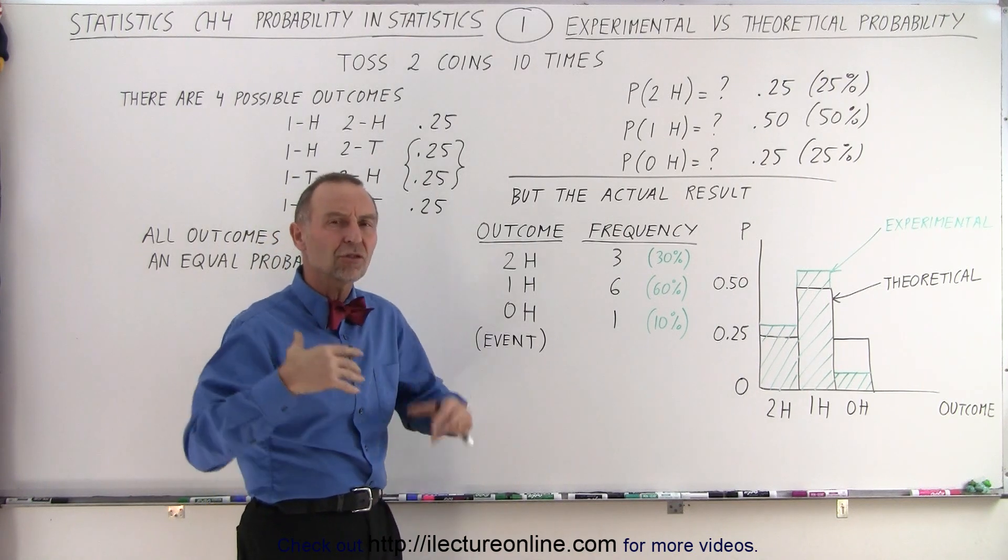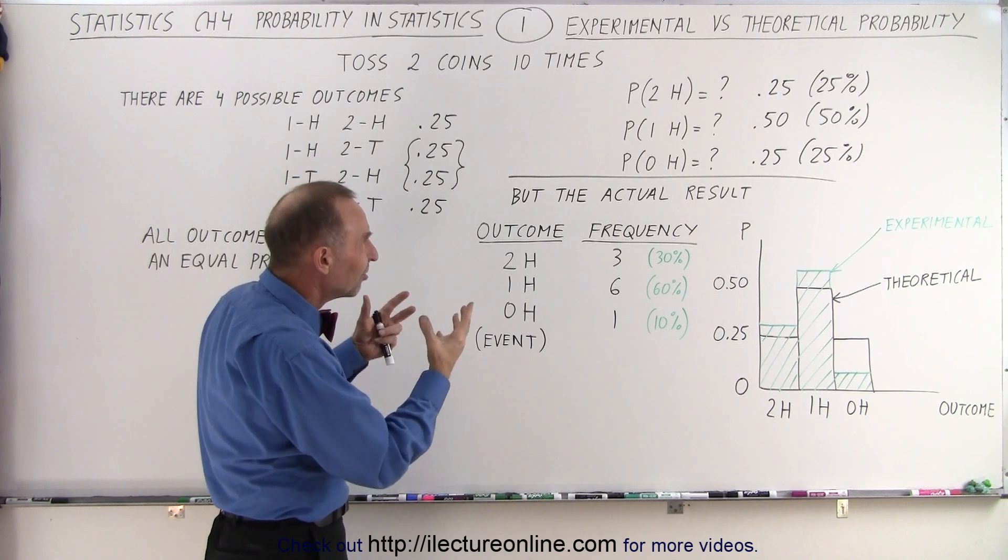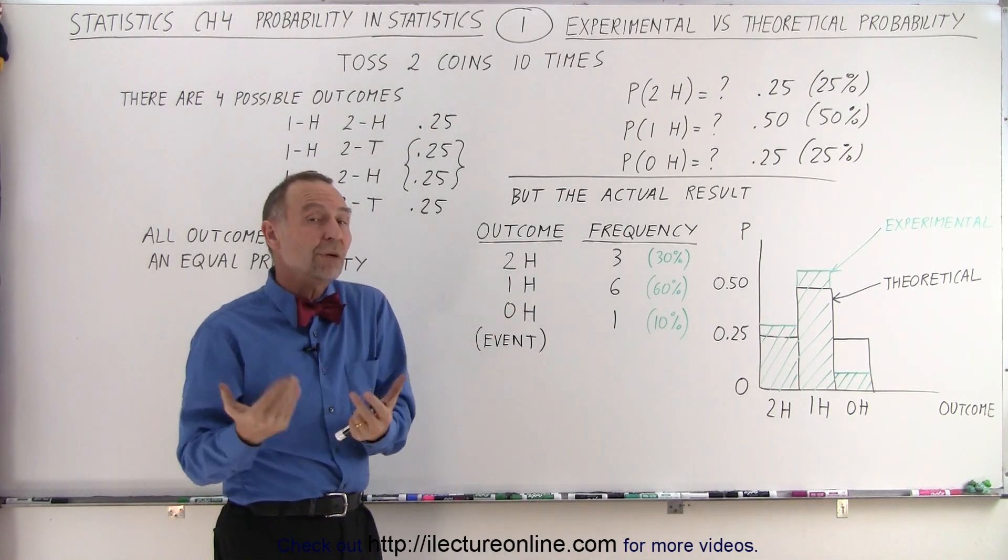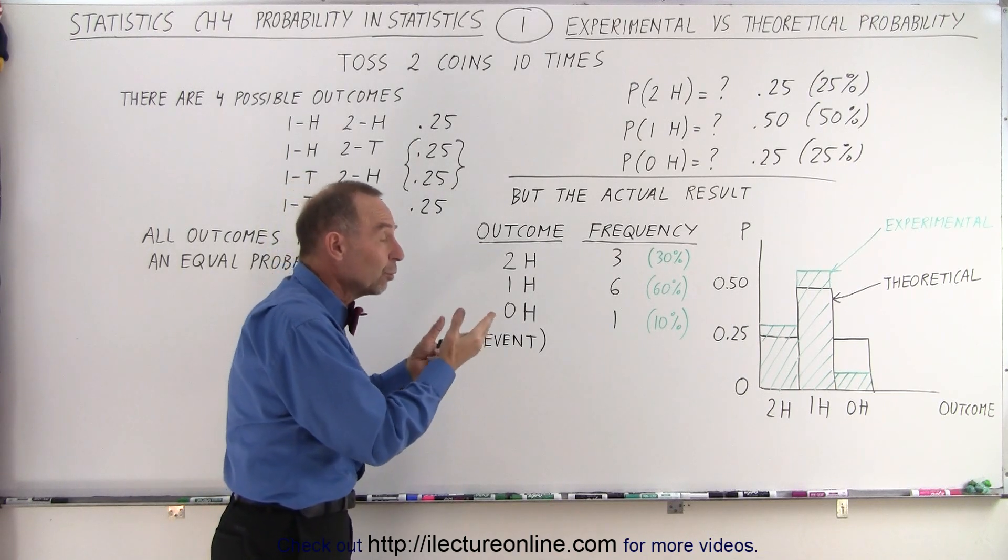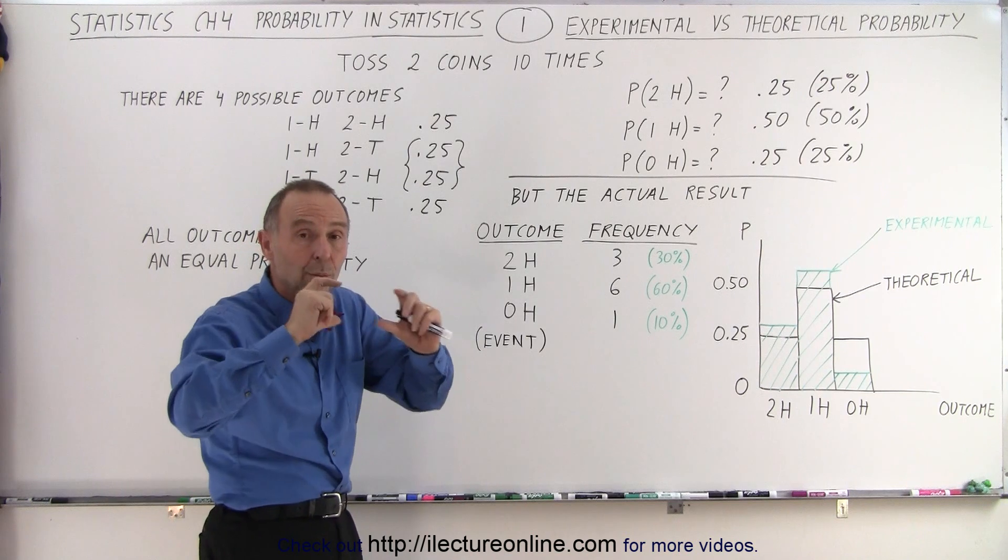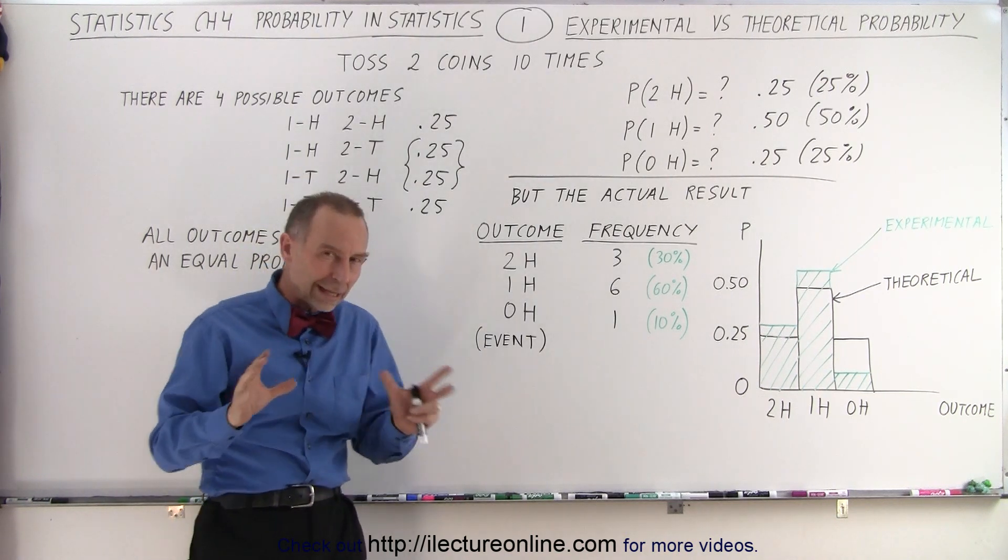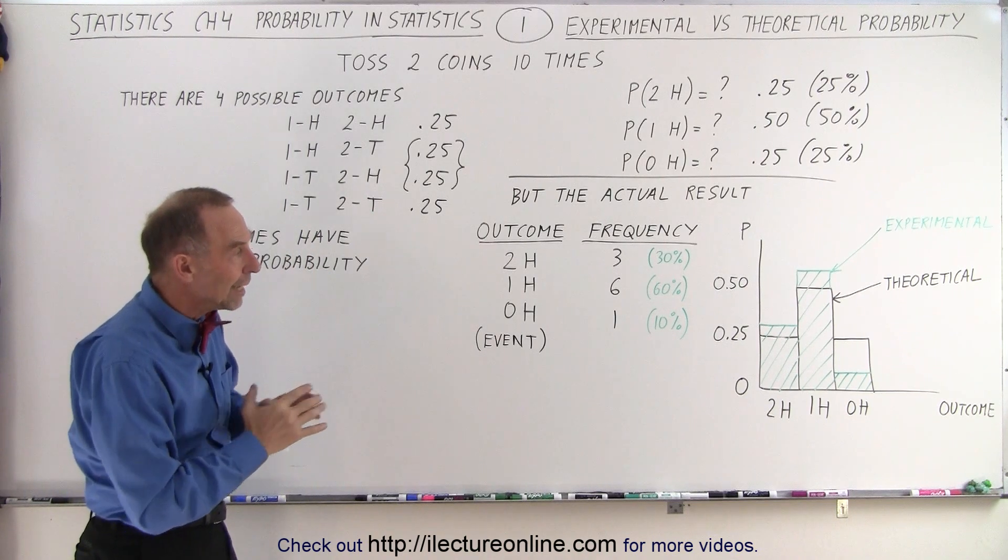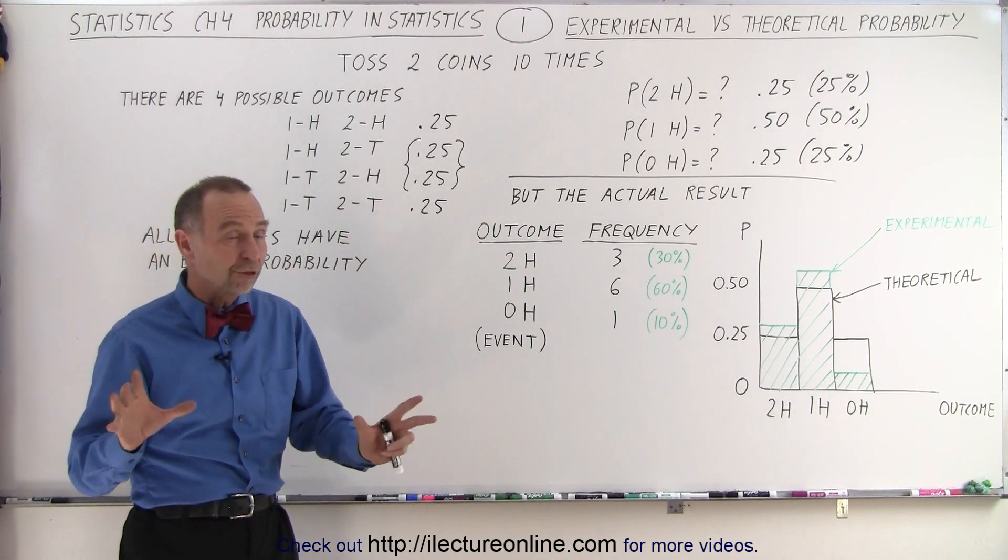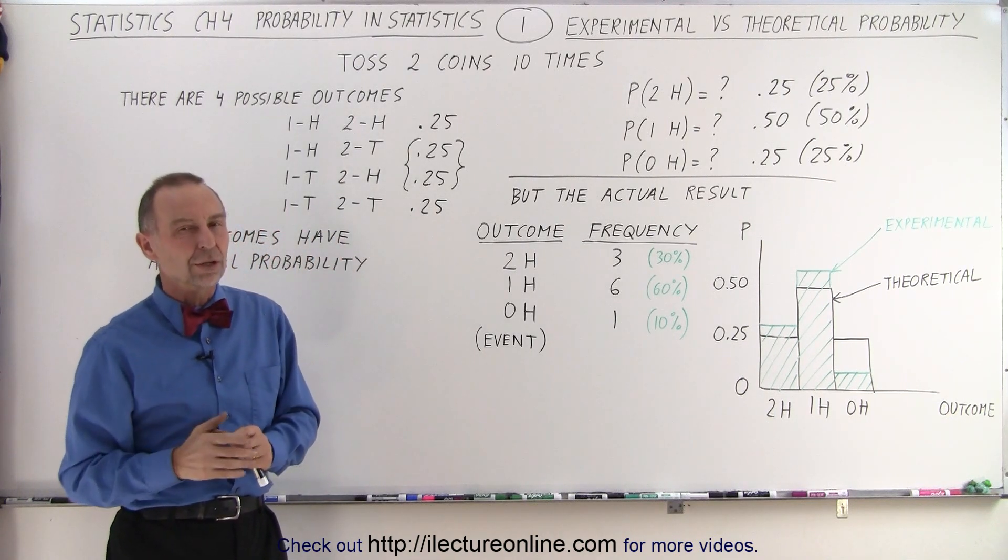So, the study about doing the, what we call the statistics on probability, would be to see, well, how many times should we toss it so that the experimental results are reasonably close to the theoretical results? And what would be the difference, depending upon the number of tosses? Those are the kind of things that we're going to be looking into in the videos to come. But at least at this point, we can see the difference between the two, experimental versus theoretical.